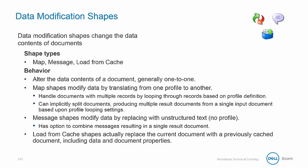Message shapes modify data by replacing the data with unstructured text, so there's no profile. The load from cache shape replaces the current document with a previously cached document, including the data and document properties.